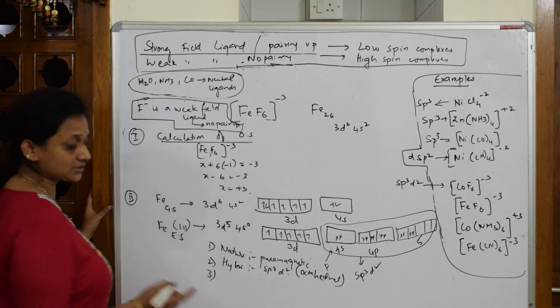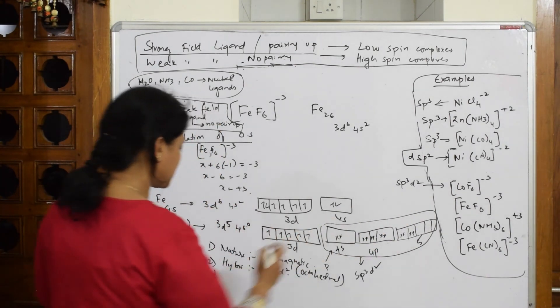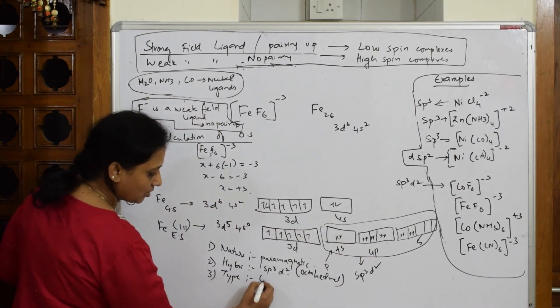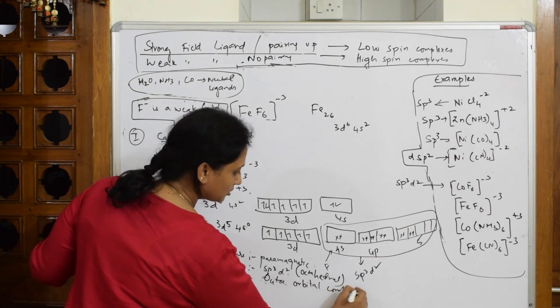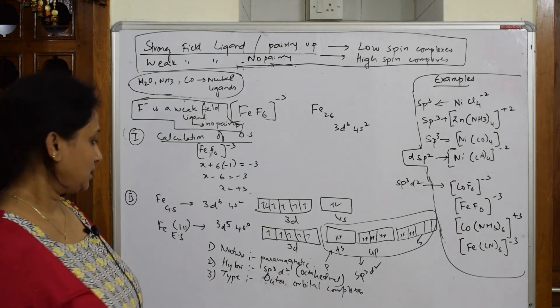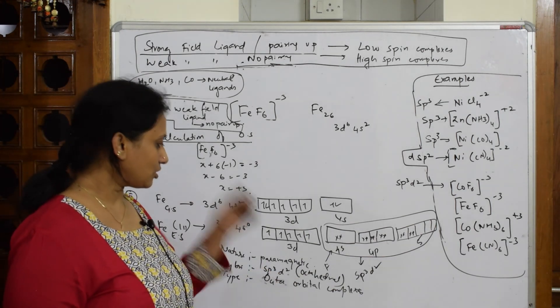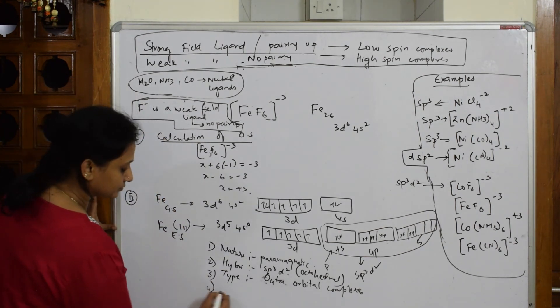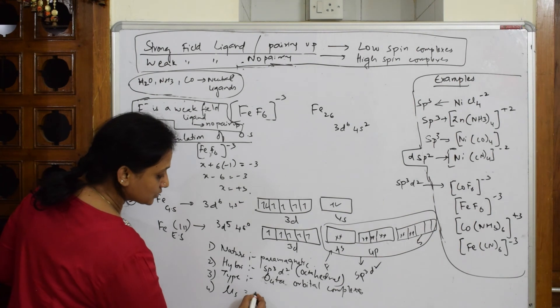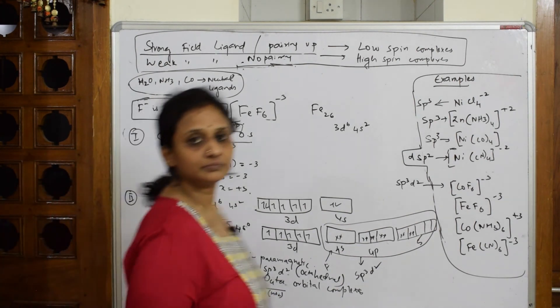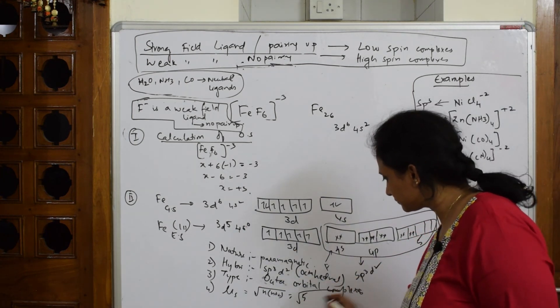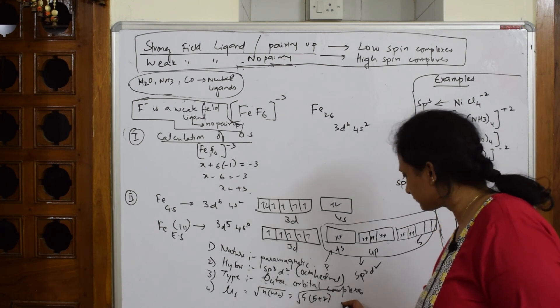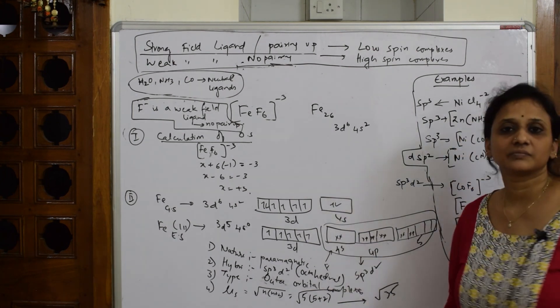After that, I have to say whether it is inner orbital complex or outer orbital. It's going outwards. So the type is outer orbital complexes because it is going outwards. What else is left? 1 is over, 2 is over, 3 - outer orbital complex. I have to calculate mu. Mu s, which equals root of n into n plus 2. What is the number of unpaired electrons? You have 5. Root 5 into 5 plus 2. Root 5 into 7. Root 35 is equal to 5.9 Bohr magneton.